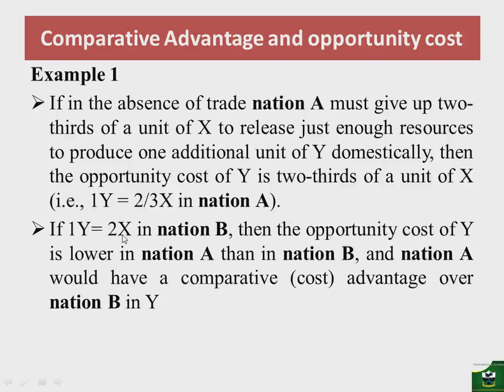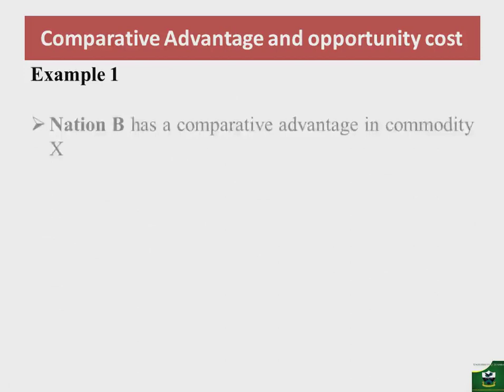Therefore, nation A has a lower opportunity cost of producing commodity Y compared to nation B. This means that nation A has a comparative advantage in the production of commodity Y, while nation B has a comparative disadvantage in the production of commodity Y.